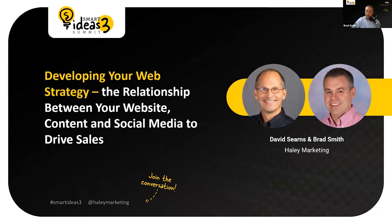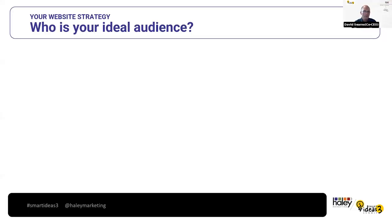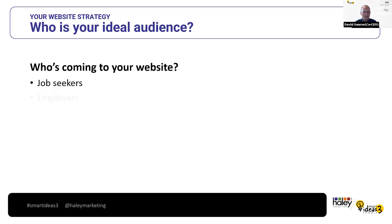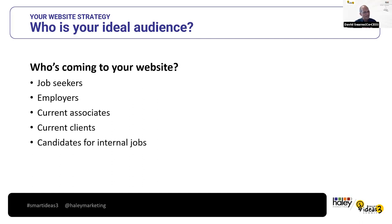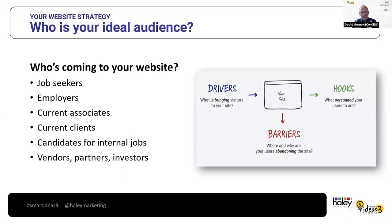Any strategy really starts with who we're targeting. The first and most important thing is who's coming to your website. Job seekers are probably the number one source of traffic, then employers, current associates, current clients, and then people not related to sales or recruiting — candidates who might want to work for us, vendors, partners, or investors. When thinking about website conversions, this diagram is all about CRO — conversion rate optimization. The 'drivers' element is understanding who these people are and why they're coming to your site. A candidate might be searching for a job, wanting advice, or just researching salaries.